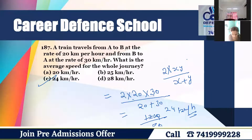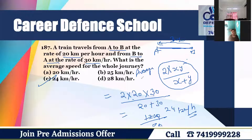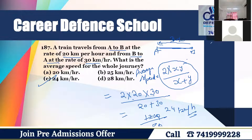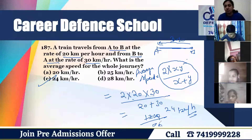A train travels from A to B at a speed of 20 km/h and from B to A at a speed of 30 km/h. Using the average speed formula: 2xy upon x plus y, where x equals 20 and y equals 30. That gives 2 times 20 times 30 upon 20 plus 30 — 1200 upon 50 — which equals 24 km/h. That is option C.